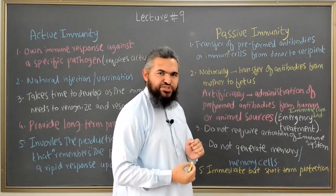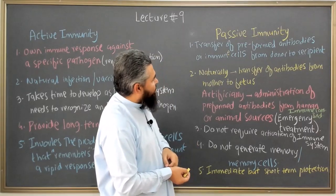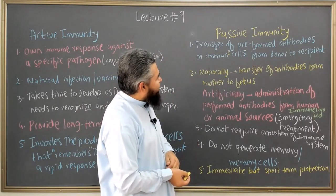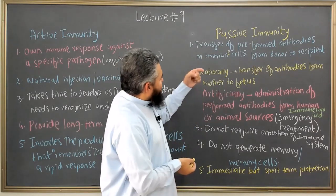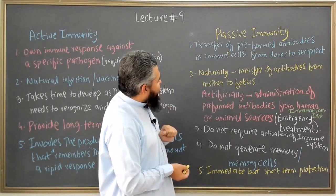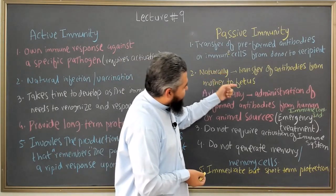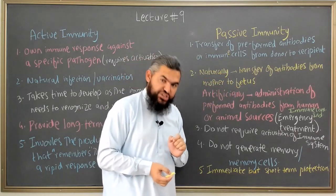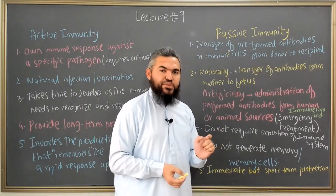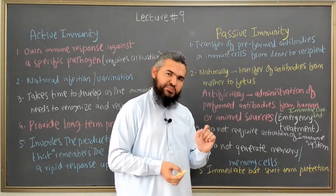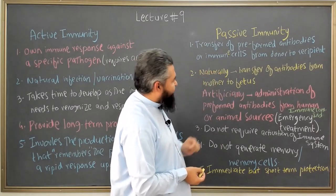This is one of the major differences between active and passive immunity. When we talk about the sources of preformed antibodies, one major source is natural. For example, the mother transfers antibodies to the fetus to provide protection against different pathological conditions. The fetus is not making its own antibodies — it is getting them from the mother. So the fetus is the recipient and the mother is the donor. This is the natural way of getting preformed antibodies.